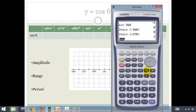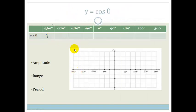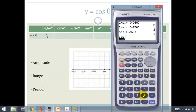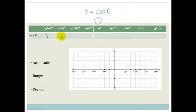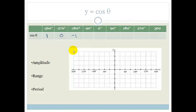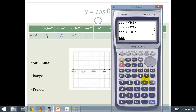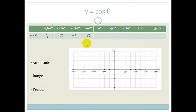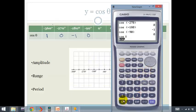We're just going to use our calculator. So we're going to say cos of negative 360 gives us 1. Cos of minus 270 equals 0. Cos of negative 180 equals minus 1. And cos of negative 90 equals 0.